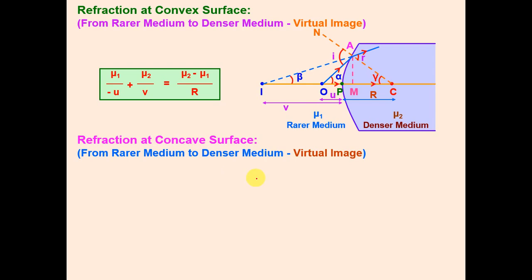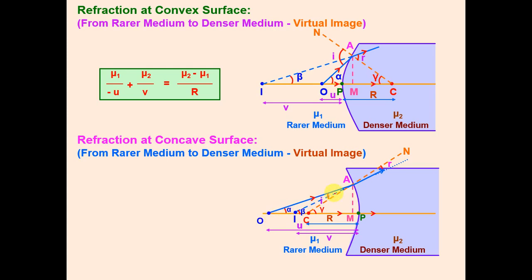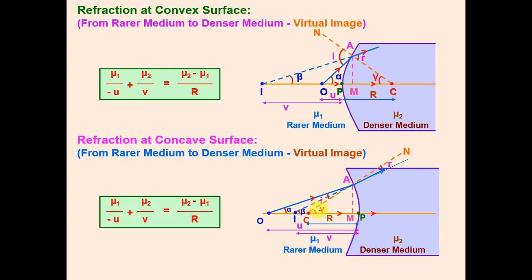For refraction at a concave surface: the object is in the rarer medium, the center of curvature lies in the rarer medium side, and the refracted ray bends towards the normal but goes away from the principal axis. The rays never meet the principal axis, giving a virtual image. Extending rays backward gives the image. Using the same triangles and three steps, the same relation mu 1/(−u) + mu 2/v = (mu 2 − mu 1)/R is obtained.